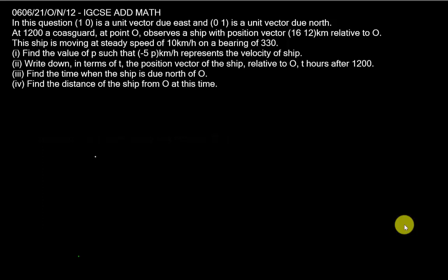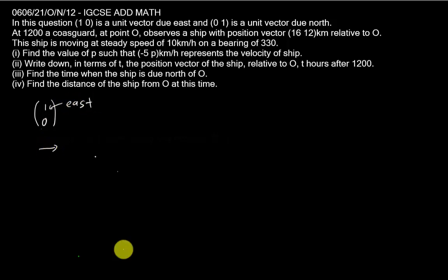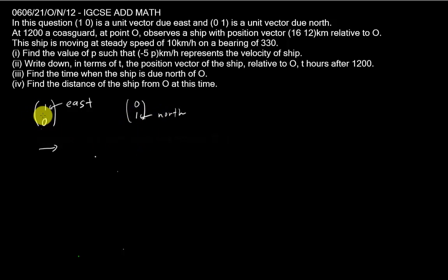Let's go into this question. In this question, (1,0) is a unit vector due east and (0,1) is a unit vector due north. Because I cannot type the column vector form, in the exam paper you'll see it written as (1,0). This means go east for one unit. (0,1) means go one unit to the north. If you see negative one in the first position, it's one unit to the west, and negative one in the second position is one unit to the south.